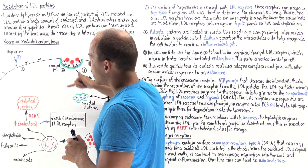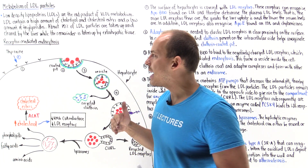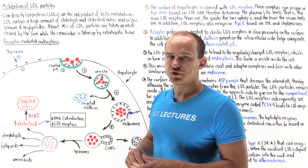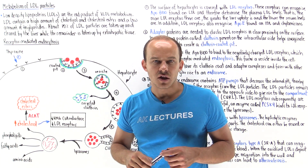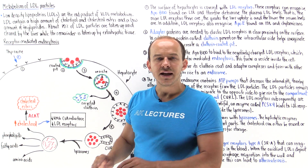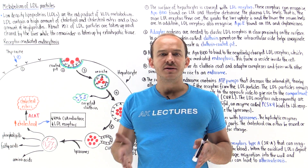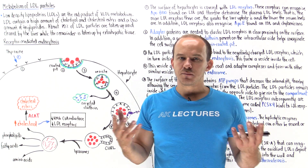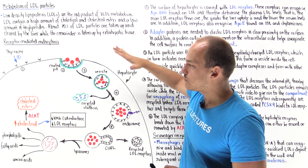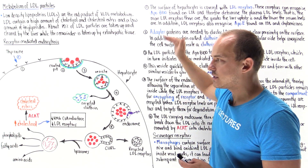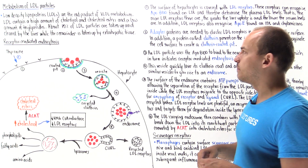Thyroid hormones can affect the amount of LDL receptors present on the cell surface. If we have a lot of thyroid hormone, that will increase the expression of LDL receptors on the surface, thereby increasing the absorption of LDL from the blood and decreasing cholesterol and LDL levels in the bloodstream. Conversely, if we have hypothyroidism, in which the thyroid gland isn't producing a lot of thyroid hormone, we essentially decrease the expression of LDL receptors, decreasing absorption of LDL and cholesterol by the liver, thereby increasing cholesterol in the bloodstream. This can cause hypercholesterolemia and increase the risk of developing atherosclerosis.